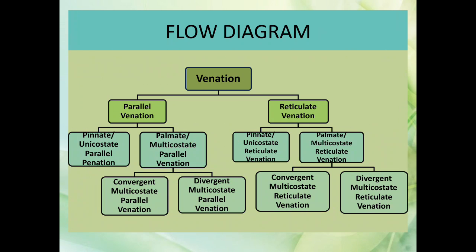Palmate multicostate parallel venation has two types: convergent multicostate parallel venation and divergent multicostate parallel venation. Similarly, reticulate venation has two types — pinnate or unicostate reticulate venation, and palmate or multicostate reticulate venation — which further divide into convergent multicostate reticulate venation and divergent multicostate reticulate venation.